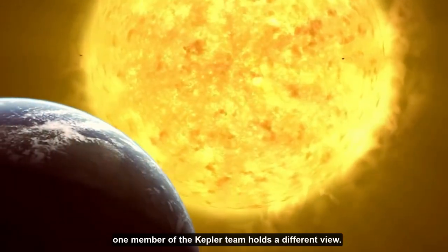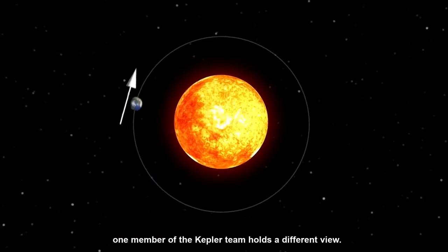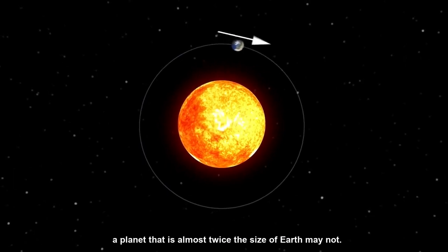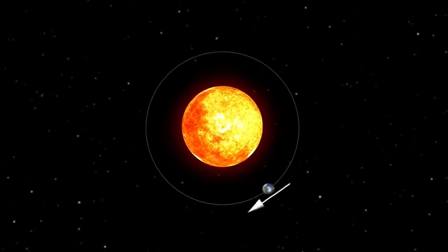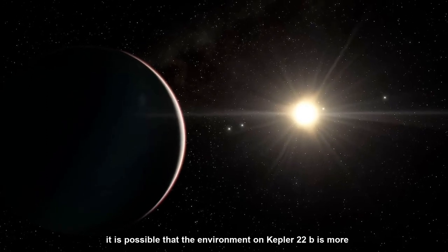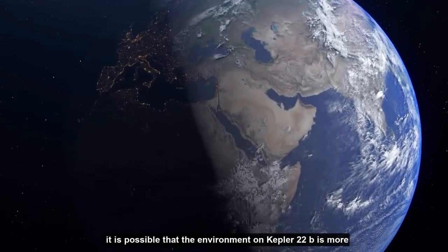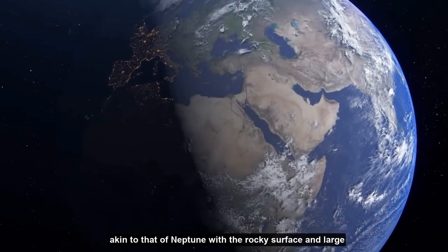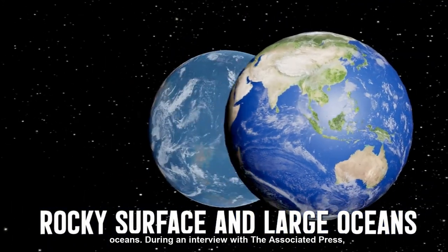However, one member of the Kepler team holds a different view. According to this individual, a planet that is almost twice the size of Earth may not be capable of supporting life on its surface. Instead, it is possible that the environment on Kepler-22b is more akin to that of Neptune, with a rocky surface and large oceans.